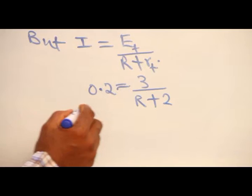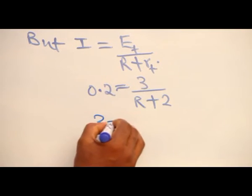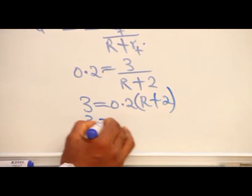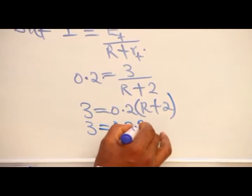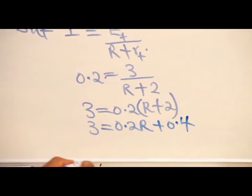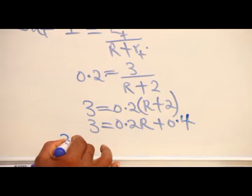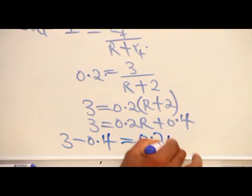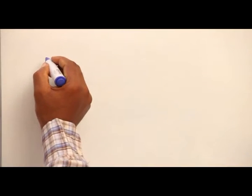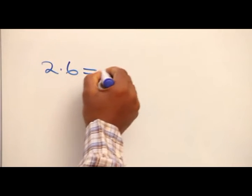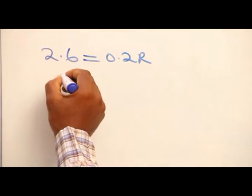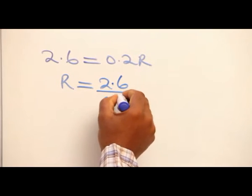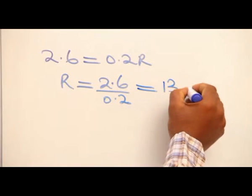If we cross multiply, we have 3 equal to 0.2 into R plus 2. 3 equal to 0.2 R plus 0.4. 3 minus 0.4 will give us 0.2 R. 2.6 equal to 0.2 R. Therefore, the resistance of the bell is 2.6 divided by 0.2, which is 13 ohms.